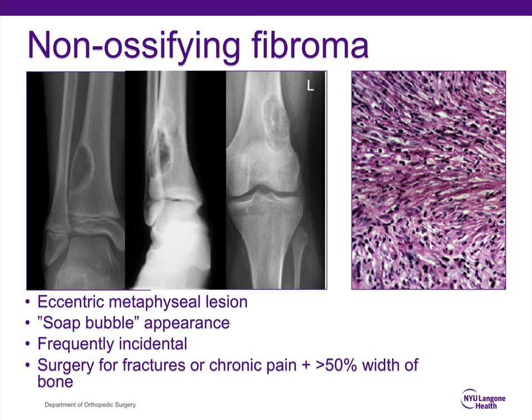Surgery is only performed for pathologic fractures or chronic pain, and when the non-ossifying fibroma expands to more than 50% of the width of bone. That's thought to increase the risk of pathologic fracture, and so surgery is performed — typically intralesional curettage with bone grafting when needed. Otherwise, patients who have these lesions can just be observed and the parents reassured.